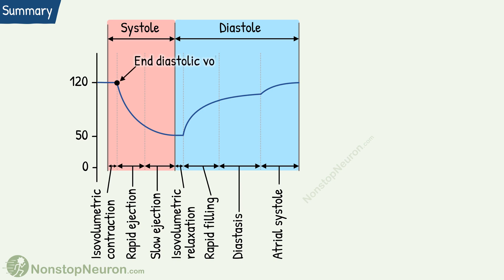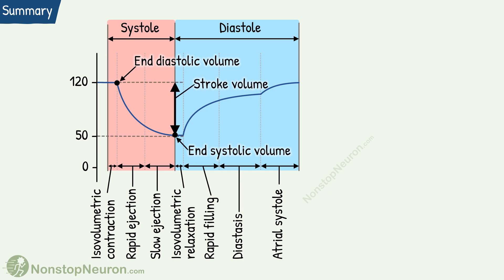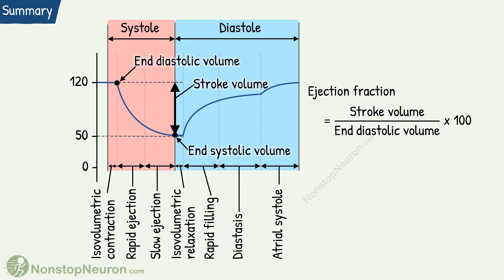End diastolic volume is the volume of blood in the ventricles at the end of diastole. End systolic volume is the volume at the end of the systole. Stroke volume is the amount pumped out by the ventricle during each cycle. And ejection fraction is the fraction of end diastolic volume that is ejected during each cycle.